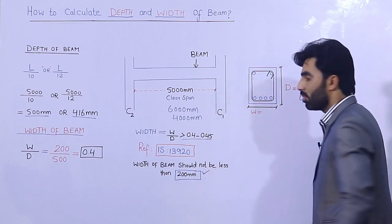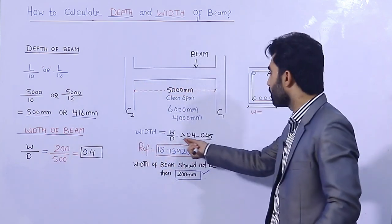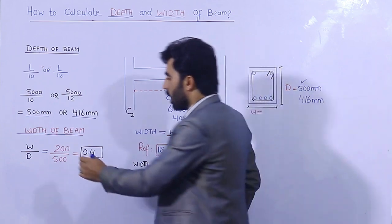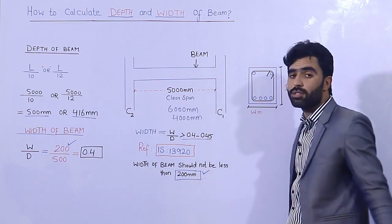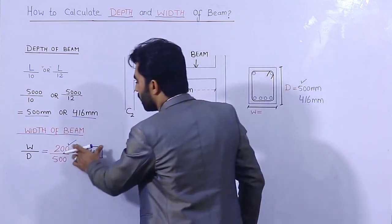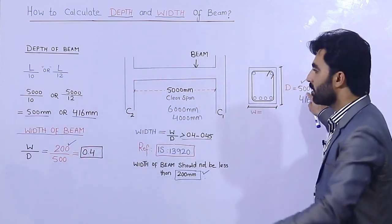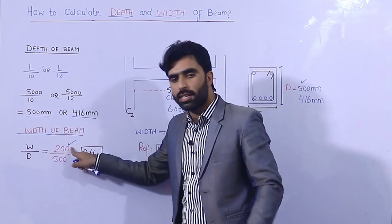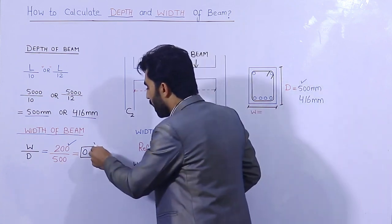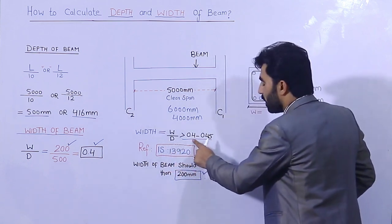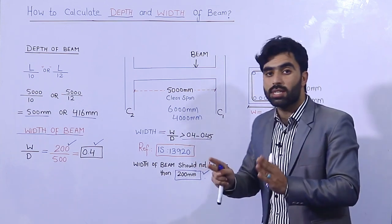Remember that the width of the beam should not be less than 200 mm. So using width divided by depth: if we take the minimum width of 200 mm and the depth is 500 mm, then 200 divided by 500 equals 0.4. Since 0.4 falls within the range, the width is safe.